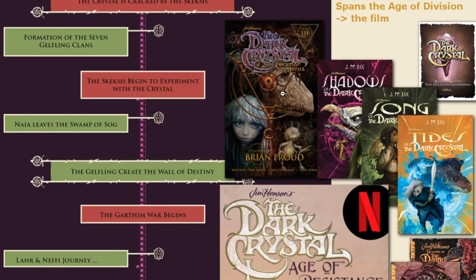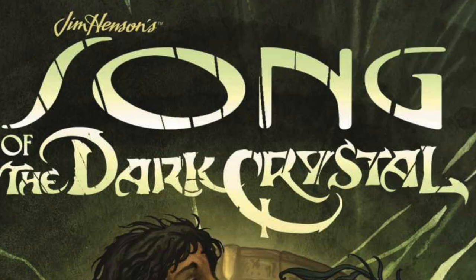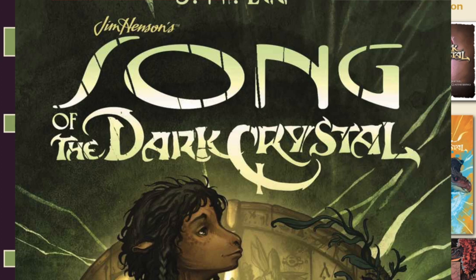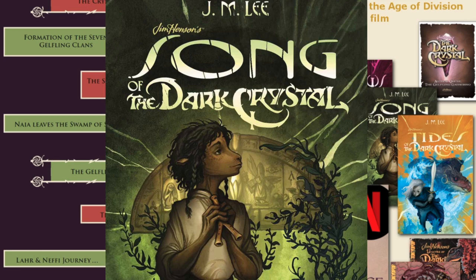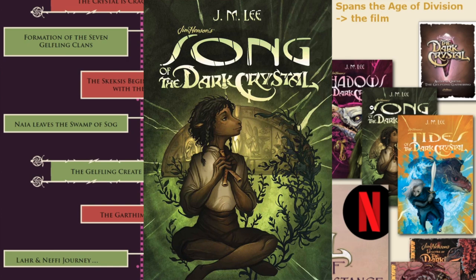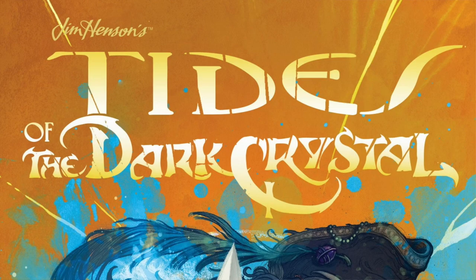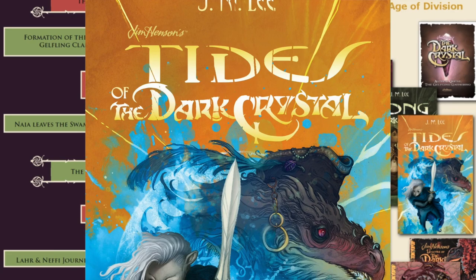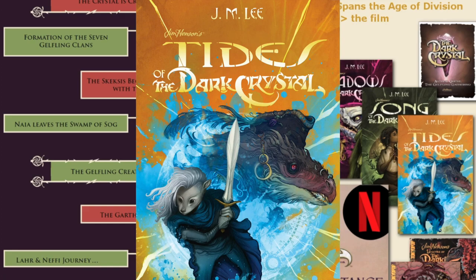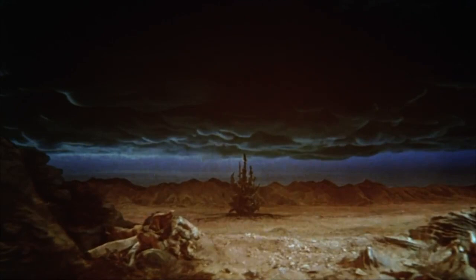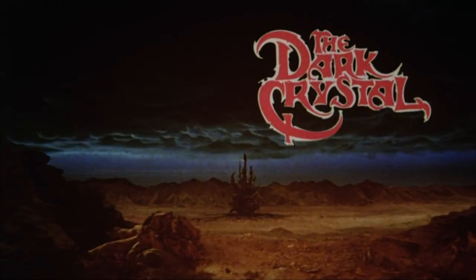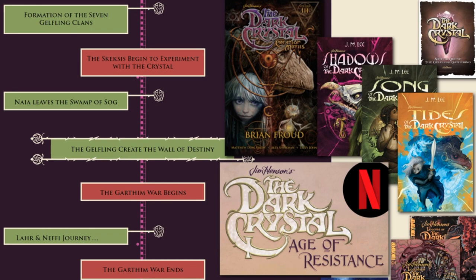The main character Naya leaves her swamp for the first time in the first or second chapter and sees the world of Thra for herself. It's really cool to explore that with her and learn about it through her eyes. After you've read Shadows, I would go back and read The Gelfling Gathering — it's fun, free, and you'll be done in 10 minutes. Song of the Dark Crystal picks up to the exact moment Shadows leaves off, and I expect Tides will do the same. You do want to read all these books together.